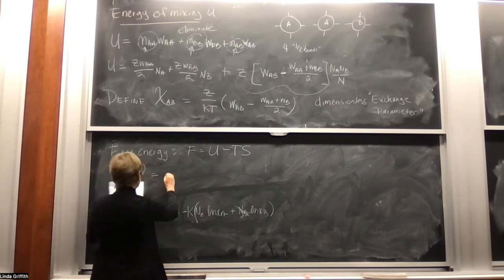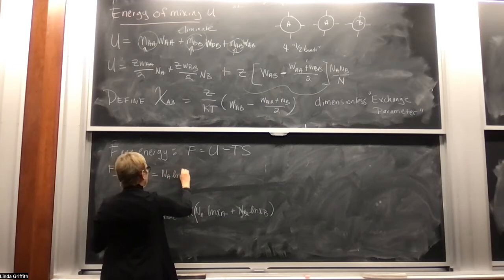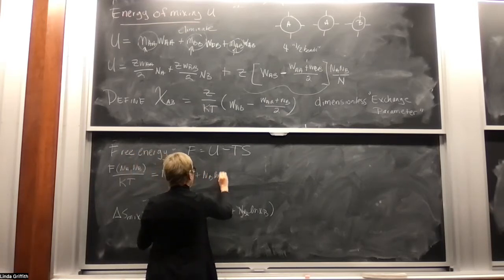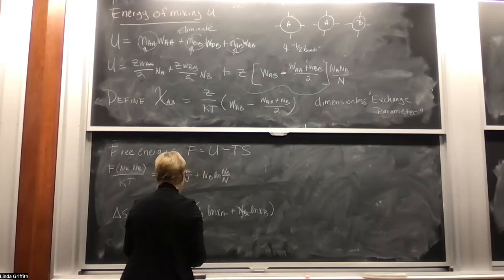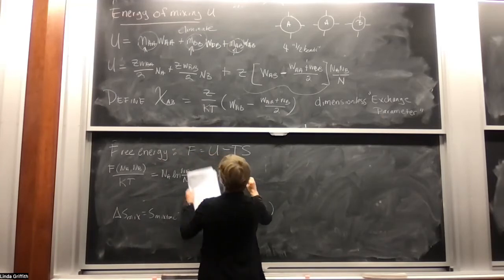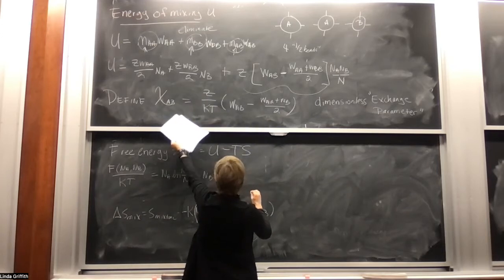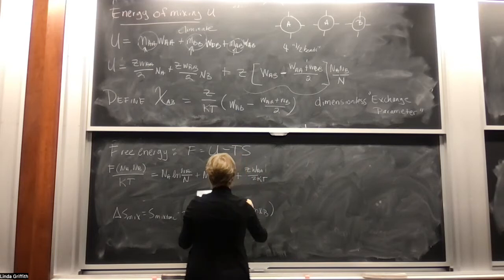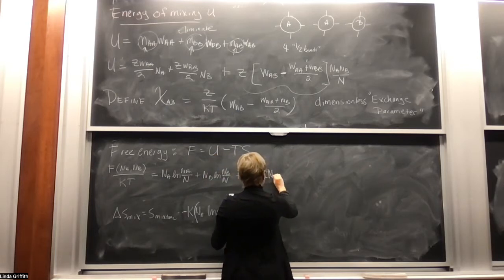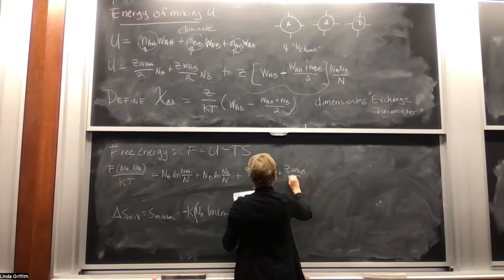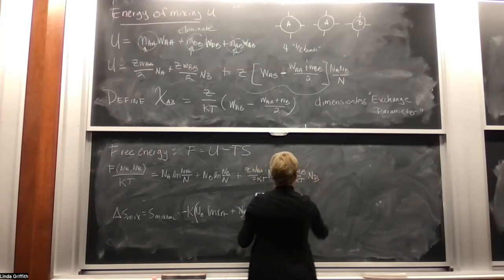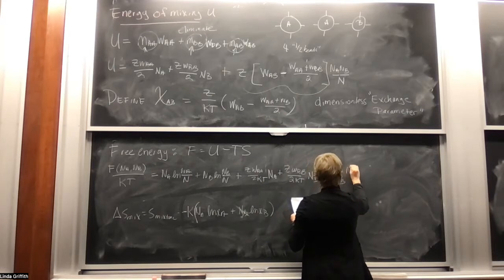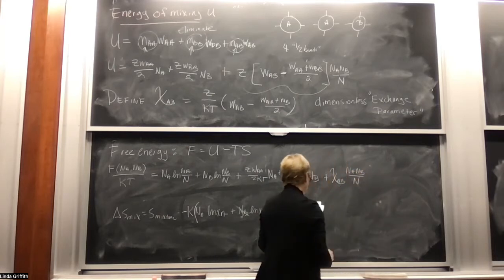Writing out F over kT: the entropy contribution (from minus TS, which becomes positive) gives N_a log(N_a/N) plus N_b log(N_b/N). The energy contribution gives z w_aa over (2kT) times N_a, plus z w_bb over (2kT) times N_b — the pure solution terms — and then plus chi_ab times N_a N_b over N from the mixture interaction.